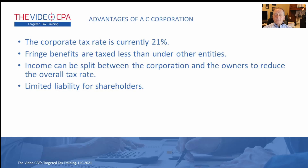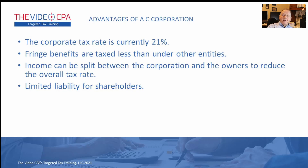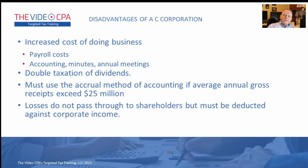The owners would pay a lesser rate and the C corporation would pay a lesser tax rate as well. Right now the C corporation has a flat tax rate of 21% — I don't know how long that will last, but that's the rate right now. Limited liability for the shareholders is also a big advantage, and S corporations and LLCs offer that same type of advantage as well.